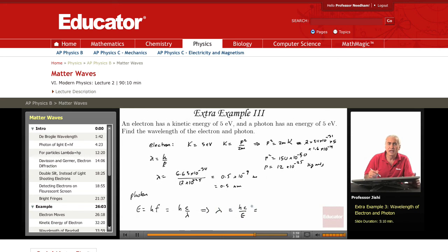Hc, as we have said, is 1240, 1240 eV nanometer. And E is 5 eV. So it's 1240 over 5. This is 248 nanometers. So the wavelength is 248 nanometers for the photon,